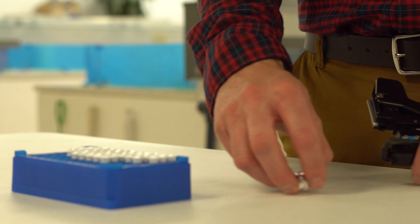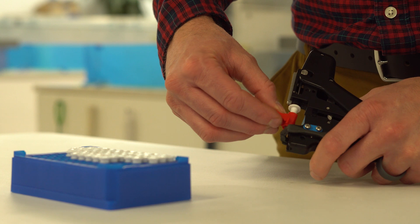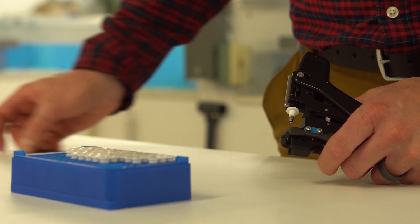To begin, place the punch into the applicator. Depress the trigger to set the punch. Remove the red safety clip by gently pulling it down and away.